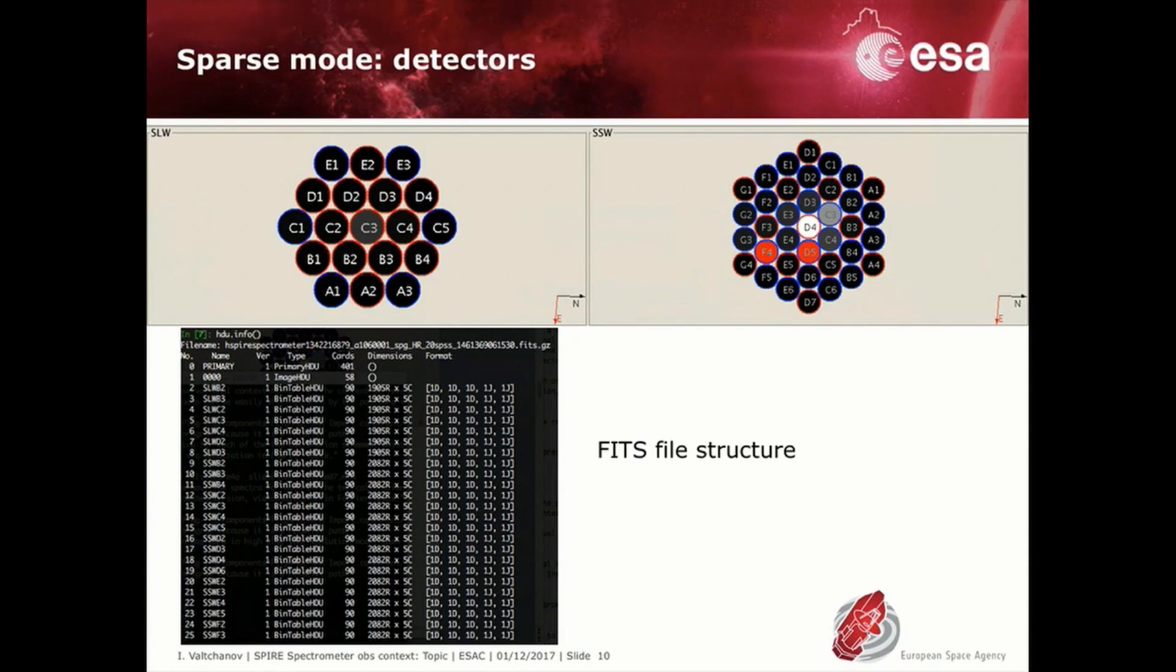Each of the level 2 subfolders contains a single compressed FITS file with the corresponding spectra for the detectors from the two spectrometer bands SSW and SLW. Each detector spectrum is stored in a table as a separate FITS extension. The names and the positions of the detectors are shown in the hexagonal representation of the two detector arrays.